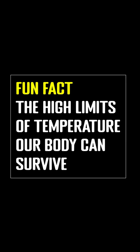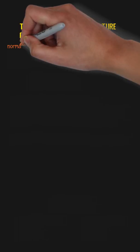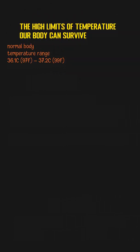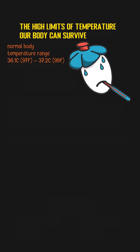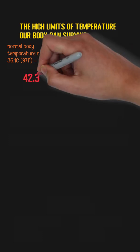The high limits of temperature our body can survive. You may always question how your body can cope with extreme situations. Here are some limits about the temperature that our body can survive. We know the normal body temperature can range between 36.1 degrees Celsius and 37.2 degrees Celsius.